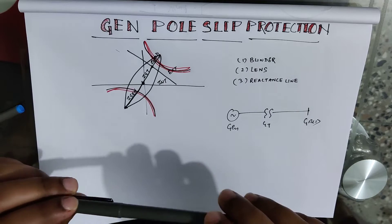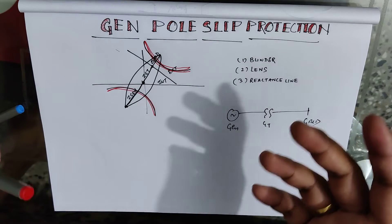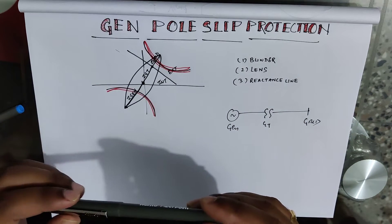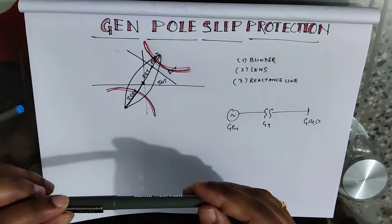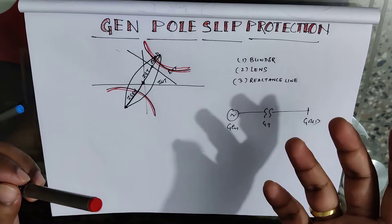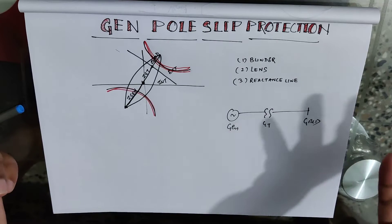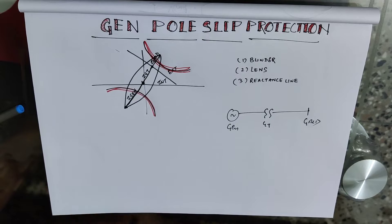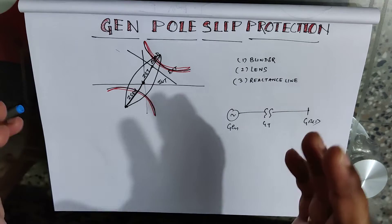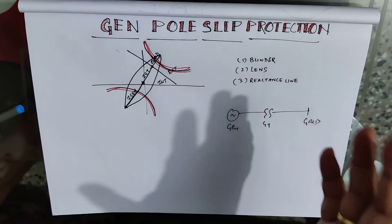As I explained in the last video, pole slip means losing synchronism. The generator rotor accelerates, over-speeds, and loses synchronism with the grid. Due to over-speed, the frequency generated at the terminal voltage is higher than the desired one, and that voltage is injected into the grid, so the grid voltage will also get affected. The other generators connected to the same grid will sense that frequency, and accordingly their governor will act and their speed will also get disturbed. So it is better to isolate the faulty generator as soon as possible to avoid a blackout condition.